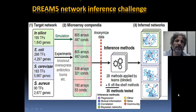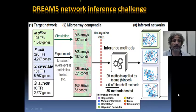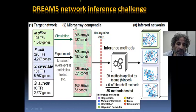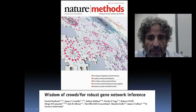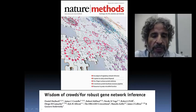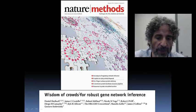Let me discuss the DREAM 5 efforts on network inference. Those consisted of predicting four different types of networks: one created in silico — a mathematical network created as if it were a real network — as well as the E. coli network, the yeast or Saccharomyces cerevisiae network, and the Staphylococcus aureus gene regulatory network. The slide shows what conditions and how many microarrays were used to infer each network from data.